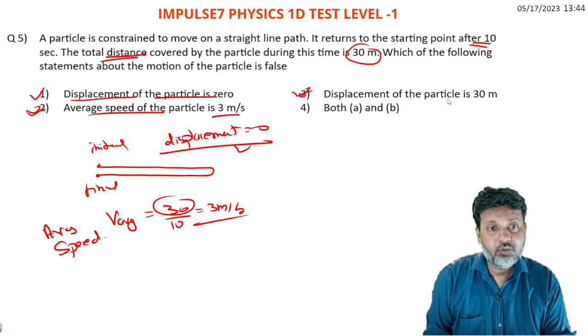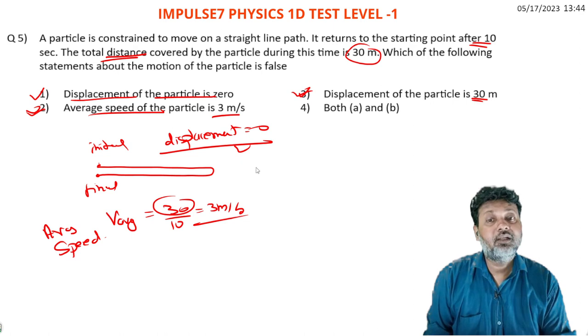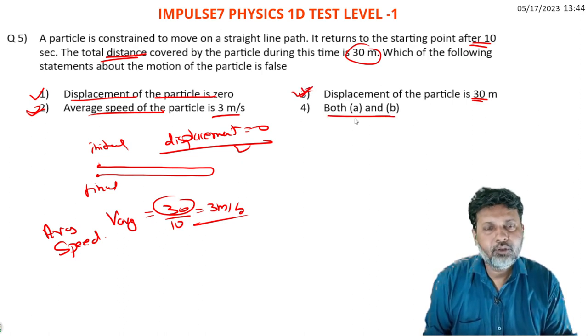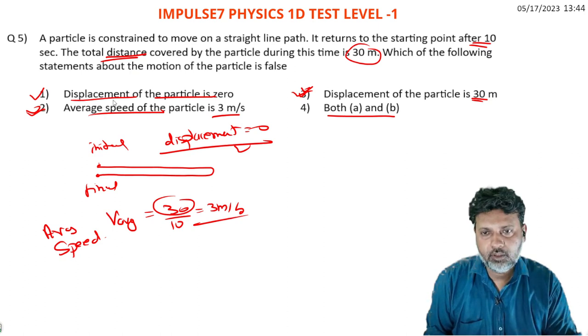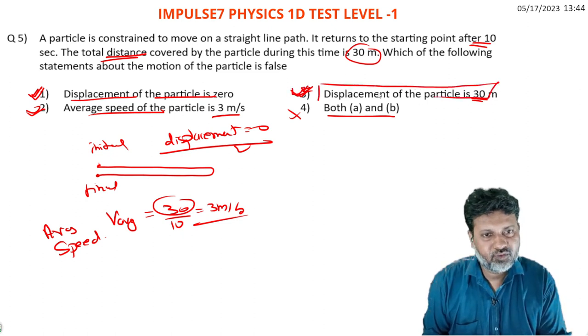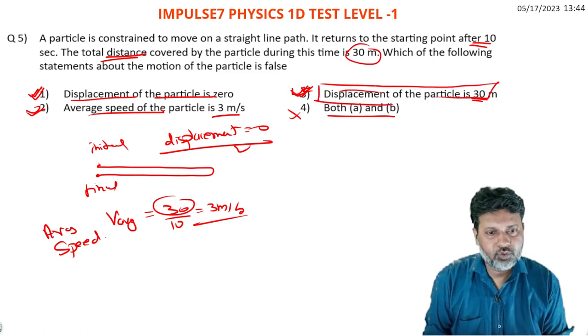Displacement is 30 meters is false. The first statement is false. Both statements are true. This is the correct option. Next question. Thank you very much.